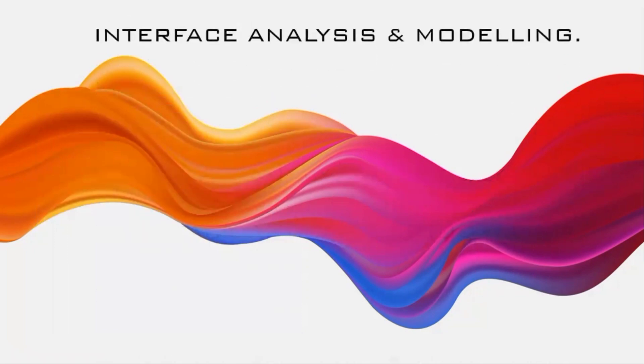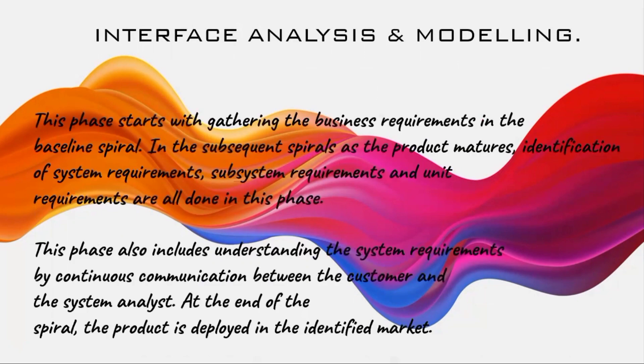Speaking about the first phase — interface analysis and modeling — this phase starts with gathering the business requirements. In subsequent spirals, it includes identification of system requirements, subsystem requirements, and unit requirements. This phase also involves continuously communicating between the customer and the system. At the end spiral, the product is deployed and identified in the market.